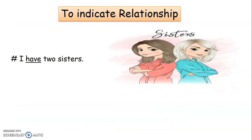Next, to indicate relationship — it shows the relationship between two things. For example, 'I have two sisters.' Here, 'I' is a plural pronoun, so we make use of the verb 'have'. Have shows the relationship between the two people.